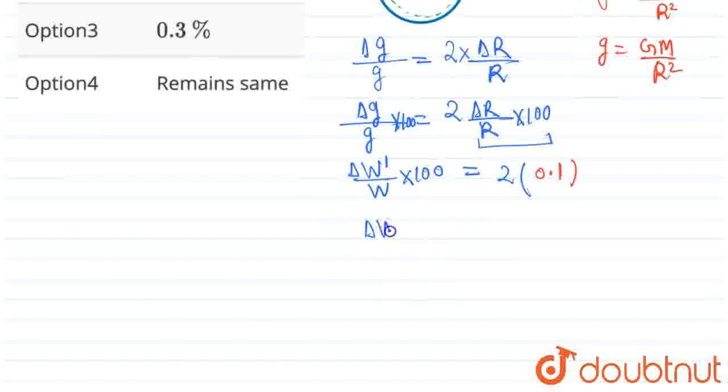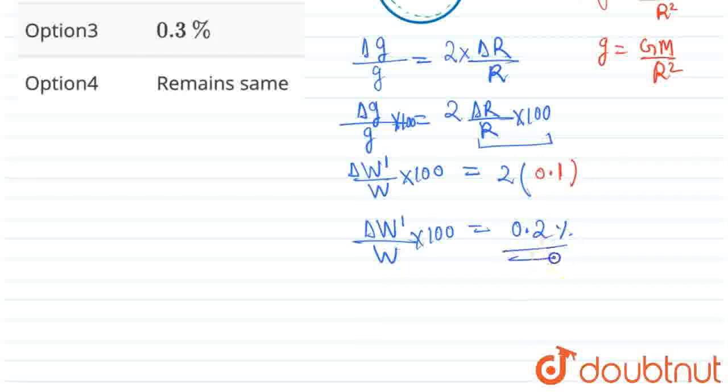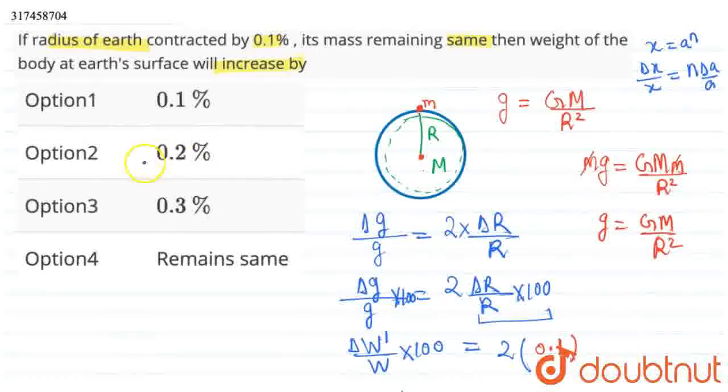If we calculate this, the value we get is delta W divided by W into 100 equals 0.2%. So our final answer will be a 2% change. We found this much, but we don't know yet if it increases or decreases.